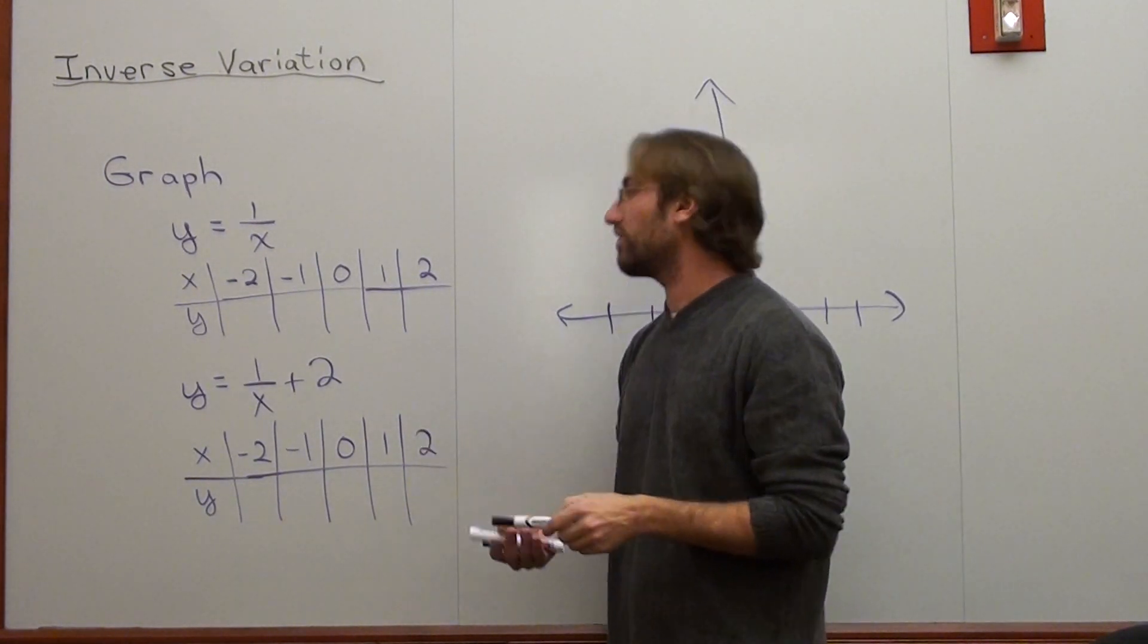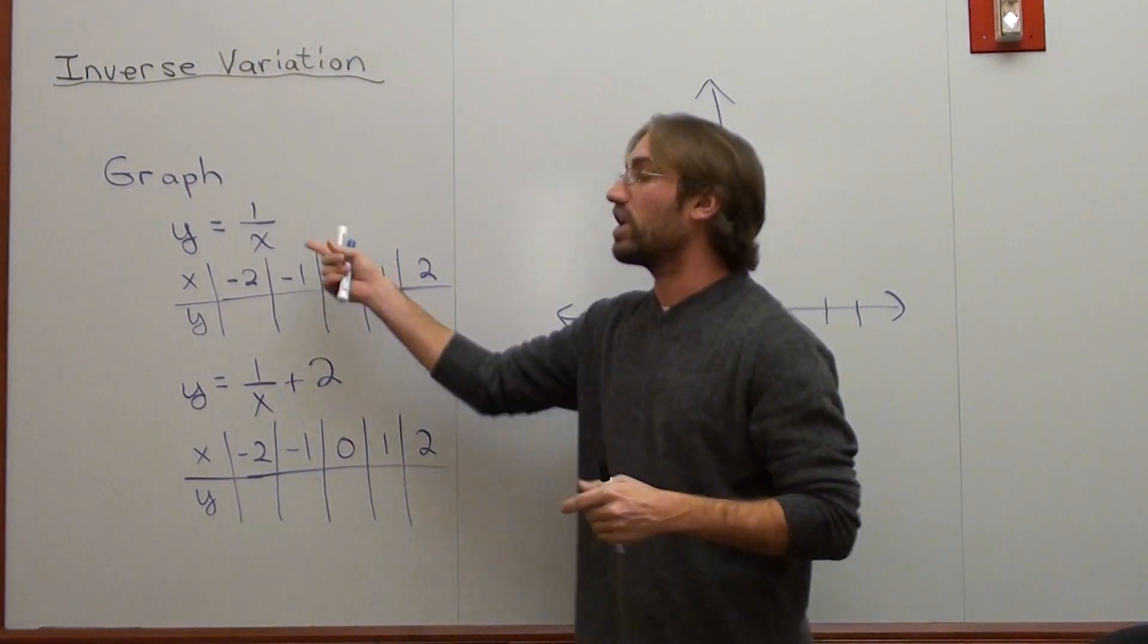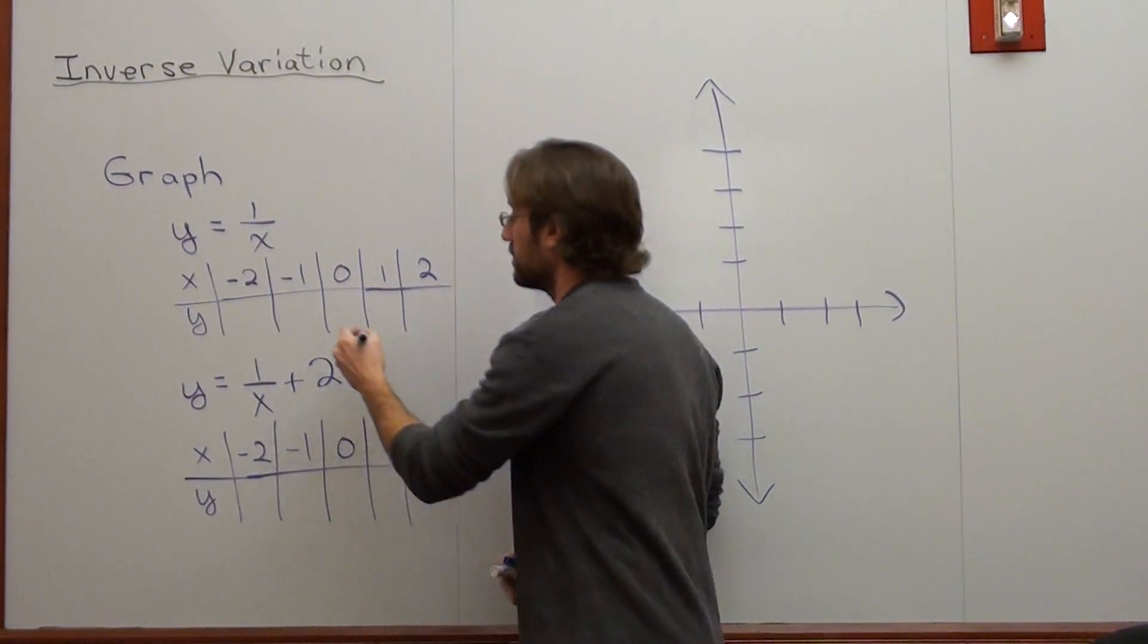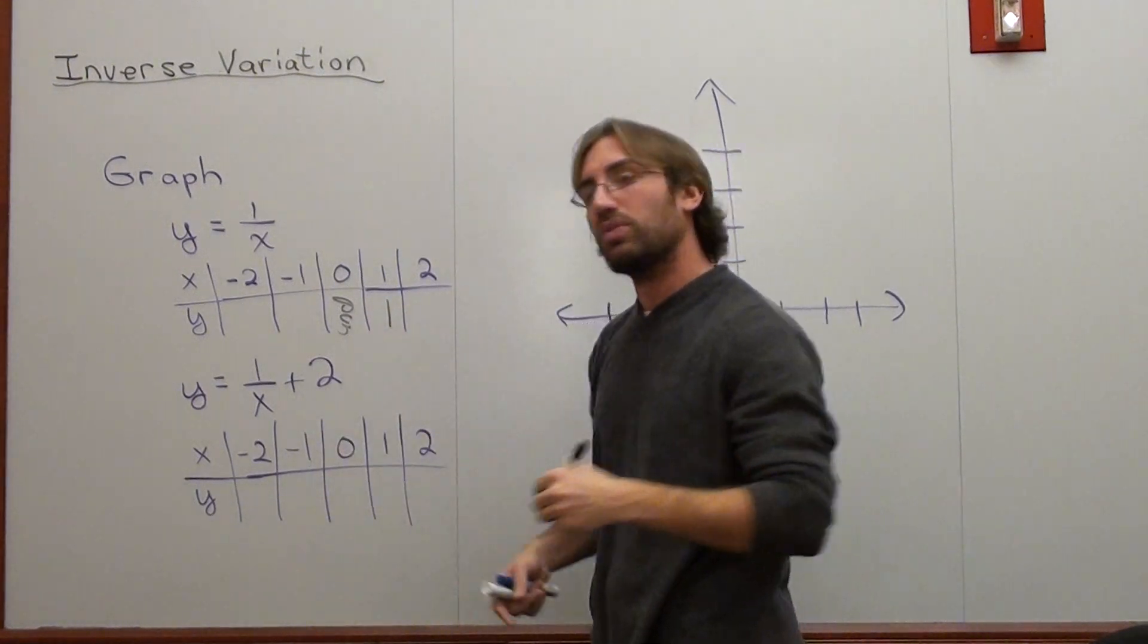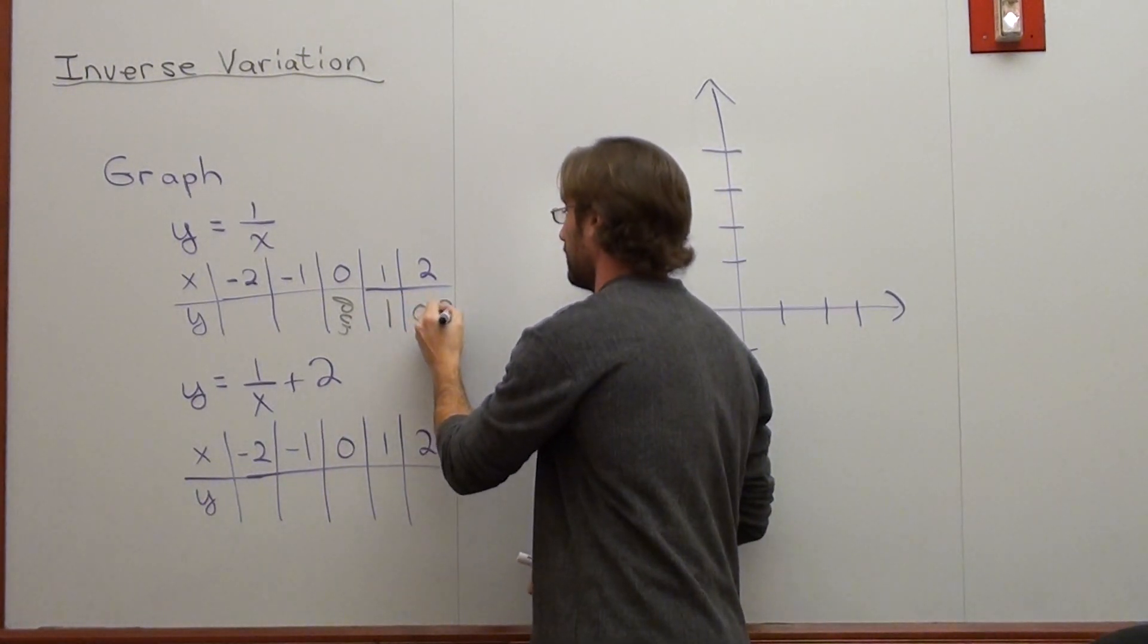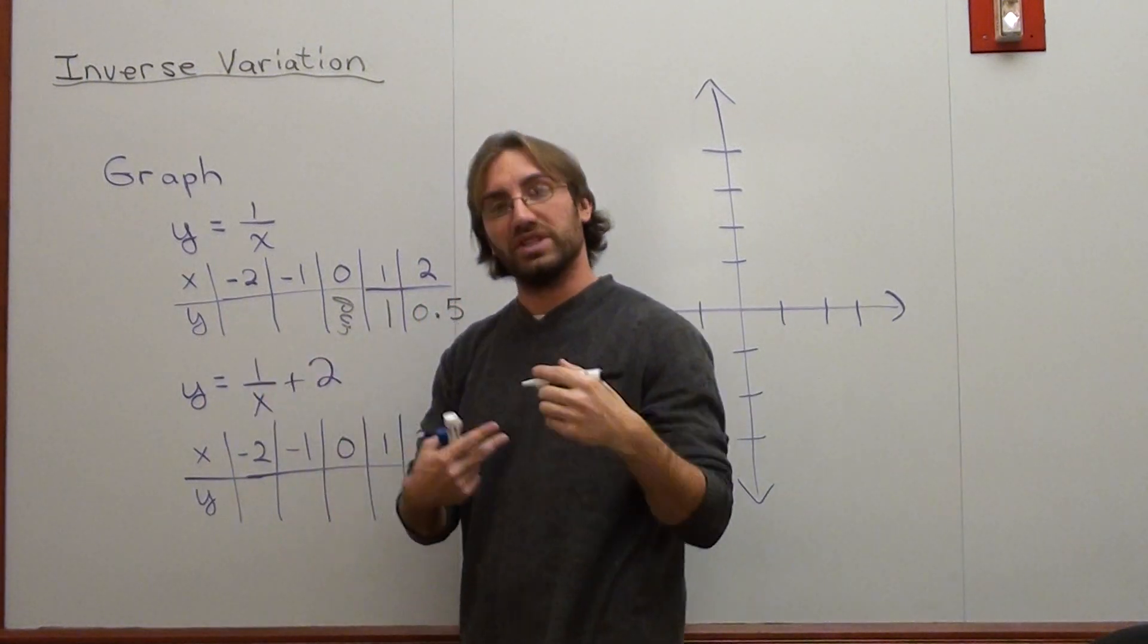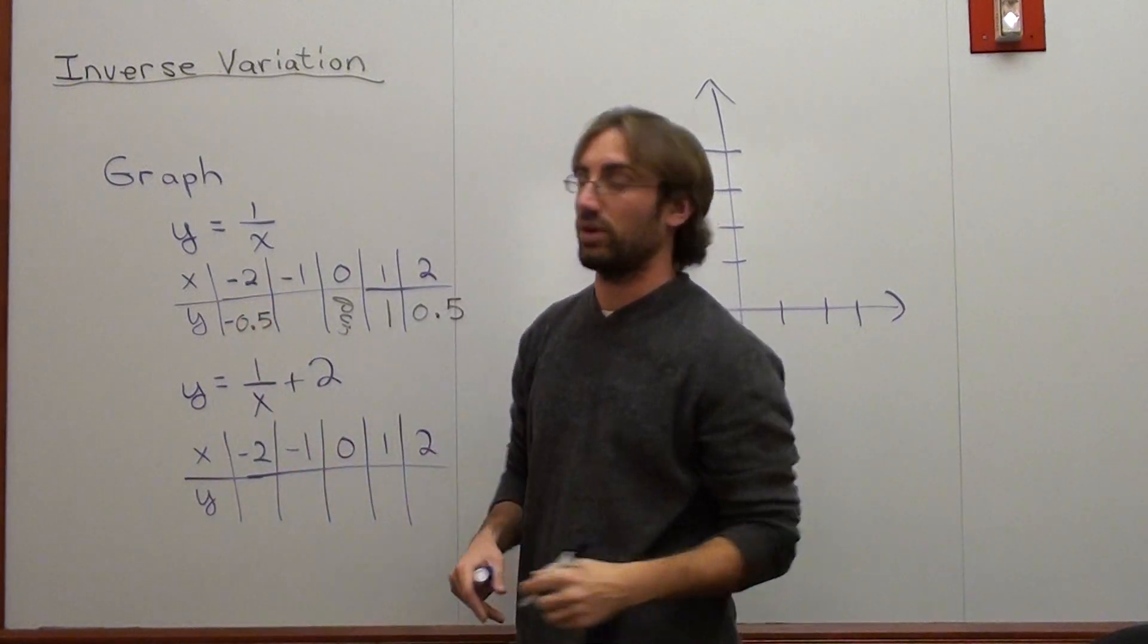So if I substitute in the values for the first one, y equals 1 over x, and I do the same ones, 1 over 0 is undefined, 1 over 1 is 1, 1 over 2 is 0.5, 1 over negative 2 is negative 0.5, and 1 over negative 1 is negative 1.